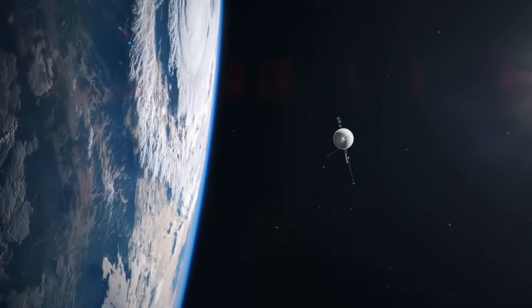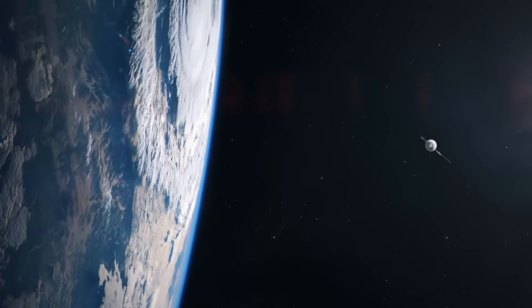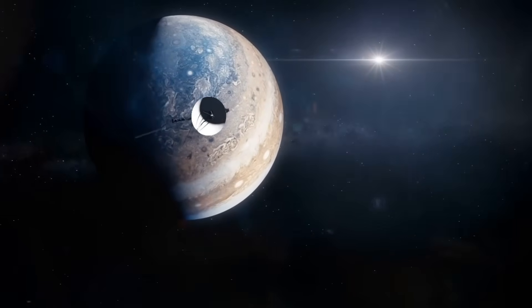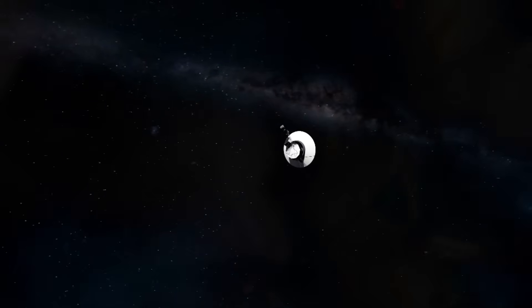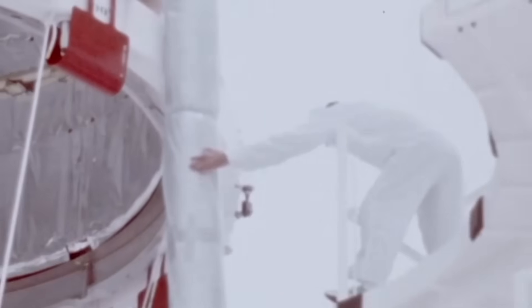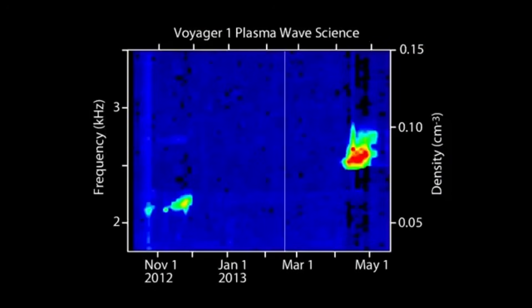Currently traveling at over 38,000 miles per hour and approximately 15 billion miles from Earth, Voyager 1 stands as humanity's most distant ambassador to the cosmos. This ancient spacecraft, designed in the 1970s with less computing power than your smartphone, has somehow managed to capture readings that are sending shockwaves through the astronomical community.